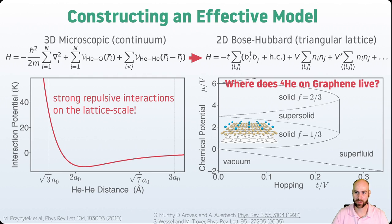So we would like to know where does helium-4 on graphene live in this phase diagram? And that amounts to extracting or figuring out how to determine this hopping parameter t, the interaction V, and next nearest neighbor interaction parameter V'.